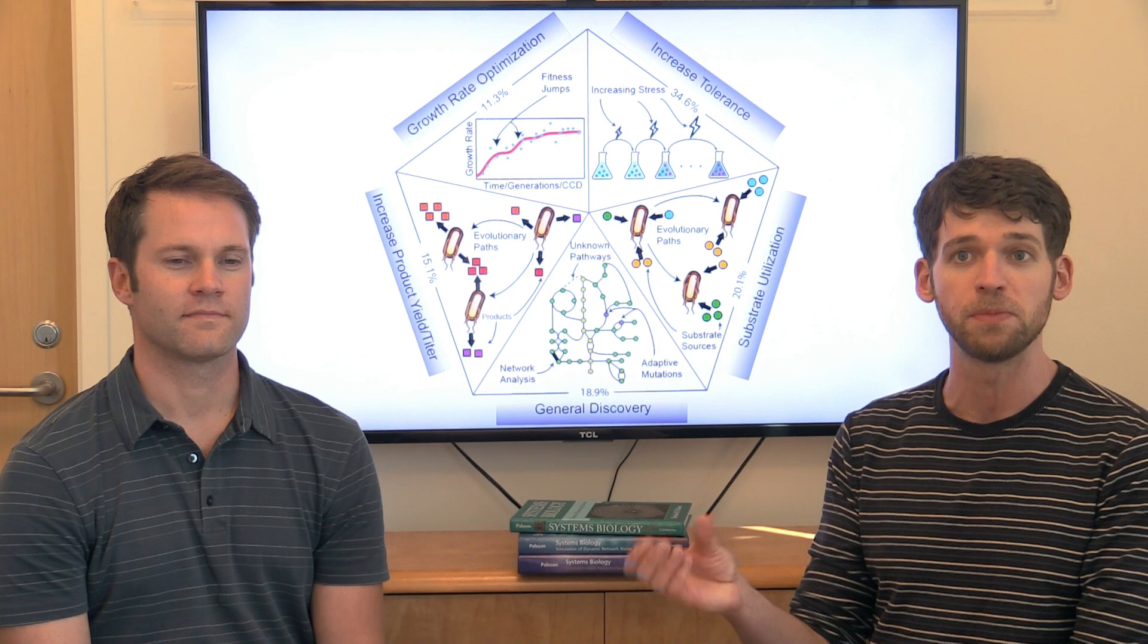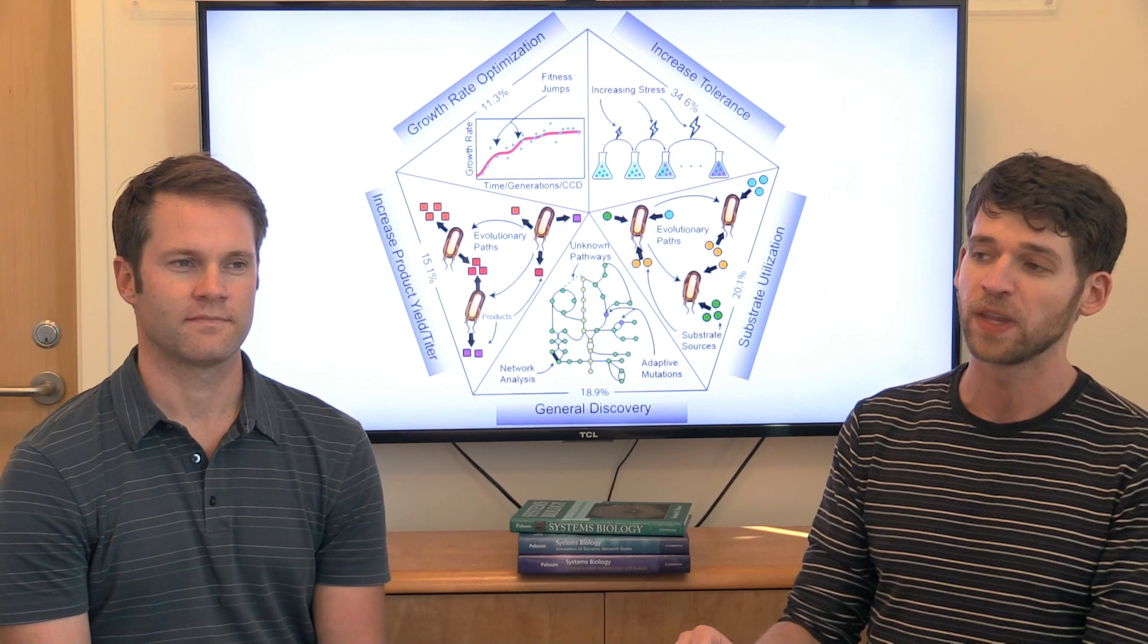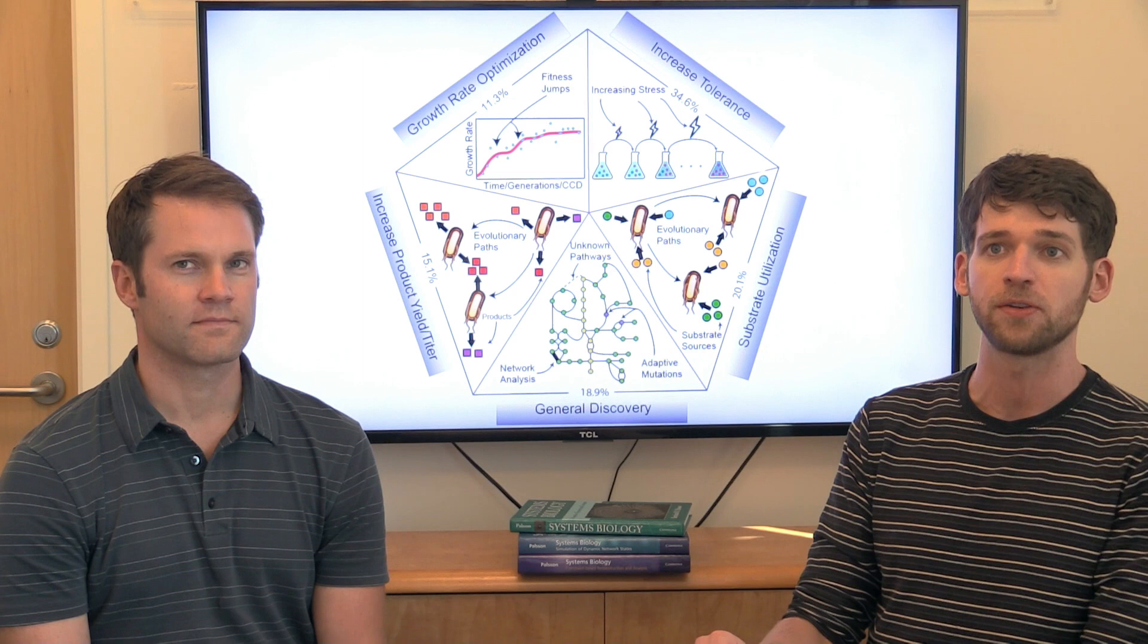You can also increase the yield of products in strains designed to produce something that's a little more difficult. We get into that in the paper some of the ways this is done. You can do targeted genetic engineering on strains to couple growth to production of this compound so that when you select for improvements in fitness they will also produce more of this compound.